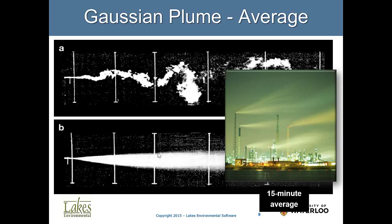The same applies to refinery tall stacks — the wind blows and the plume goes all over the place instantaneously, but on average, the spread looks Gaussian. This is what the mathematics we use — the Gaussian plume equation — represents: the concentrations the plume causes in the x-, y-, and z-axes.